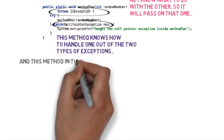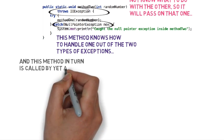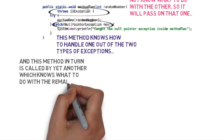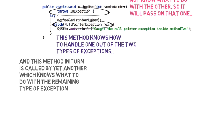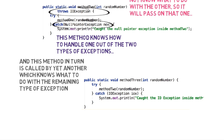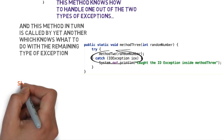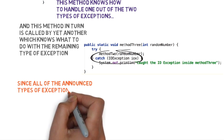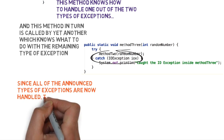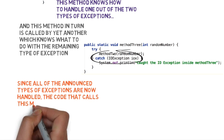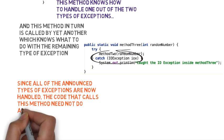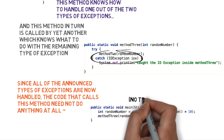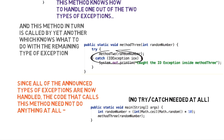Let's set up another method — method three — which in turn calls method two. Method three knows what to do with the remaining exception type. Remember, method two did not handle the IOException; instead it passed it on to its calling code via its signature. So method three calls method two and catches the IOException. In this entire chain of method three calling method two calling method one, all of the announced exceptions are now handled. The code that finally calls method three doesn't need to do anything — it has no known exceptions to handle.